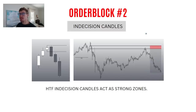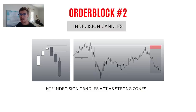Order block type two: indecision candles. They won't always be indecision candles, but they provide stronger confirmation — especially on a higher time frame. I like to use the one-hour, four-hour, and even the daily to look for these indecision candles. If you find them on higher time frames, the higher the time frame, the stronger the confirmation. As you can see: displacement, break-in structure, leaves behind indecision candle — we mark it out, and it taps into our zone perfectly.